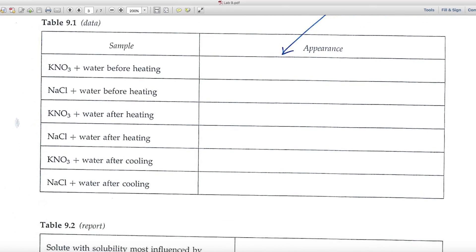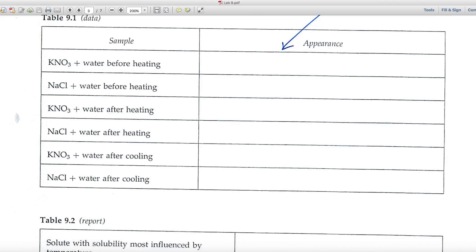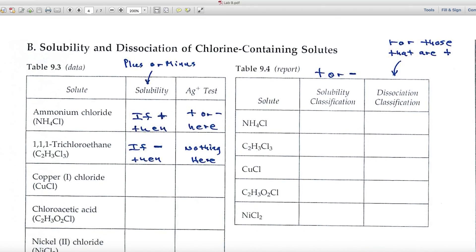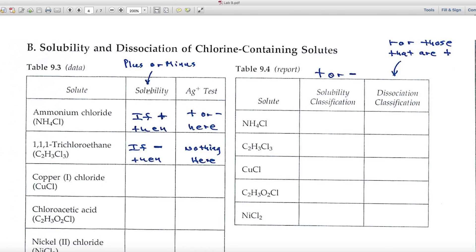So, in each of these parts, look to see if solubility has occurred or if you have a solid sitting on the bottom. Part B deals with the solubility and dissociation of chlorine-containing solutes. These are the substances that we're going to try to dissolve. Each of them have chlorine somewhere within the structure.